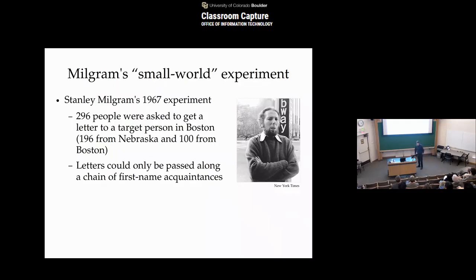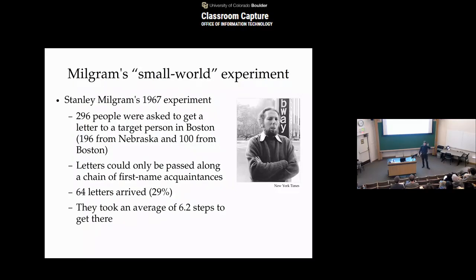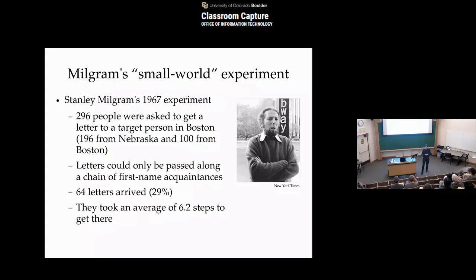The first result of this experiment was that most of the letters got lost — only less than a third actually arrived. But of the ones that did arrive, the famous result is that it took on average about six steps to get from a randomly chosen volunteer in Omaha, Nebraska to the target person in Boston, Massachusetts. In the context of citations, this is exactly like the Erdős number — how many steps through the collaboration network from you to Paul Erdős. So this is Milgram's friend-in-Boston number: how many steps through the social network to get to them?